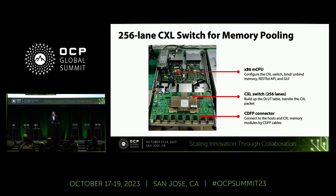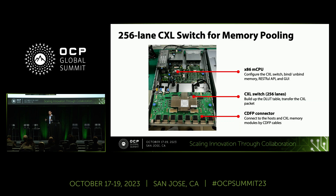This is the real box. We put a management CPU in it. The management CPU creates a virtual CXL tree, so when the host sees it, it will see virtual devices from the host side. It also sets up the CXL switch — for example, configuring ports as upstream or downstream ports, binding and unbinding memory from a single host, and aggregating all CXL memory information to provide to variable managers. On top of that, we provide a RESTful API and GUI, and you can manage this management CPU via Ethernet. The CXL switch performs device lookup table (DLUT) operations and transfers packets from the host to the device.